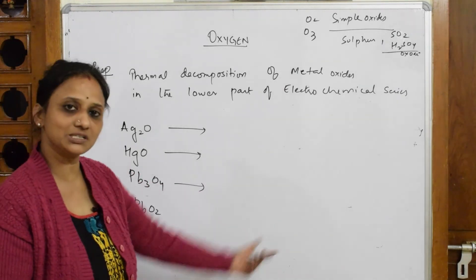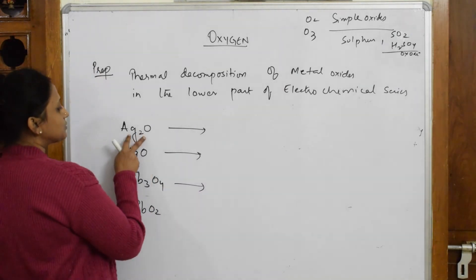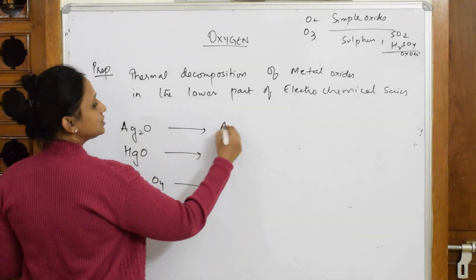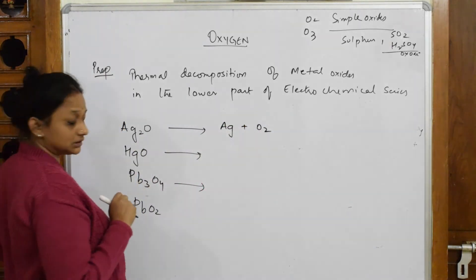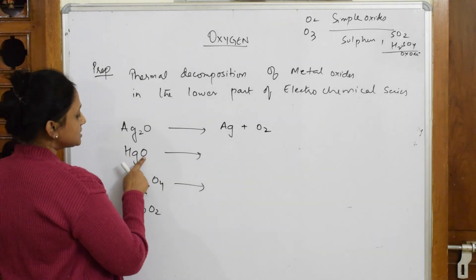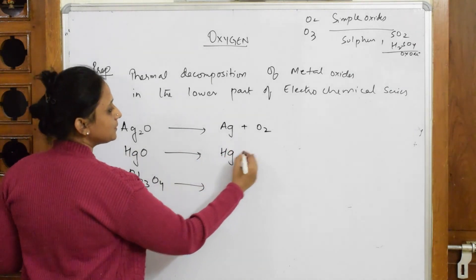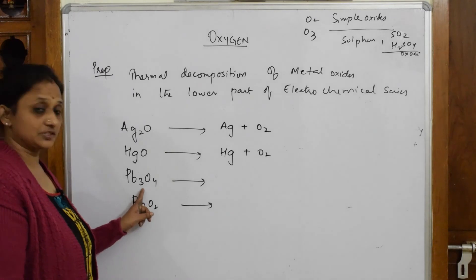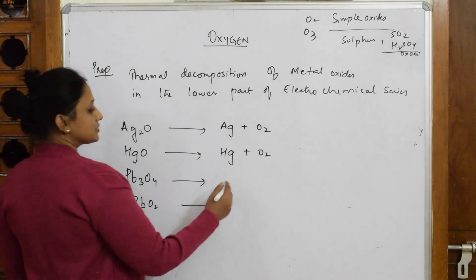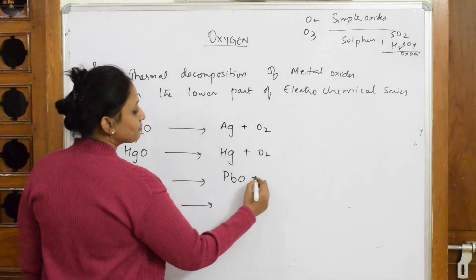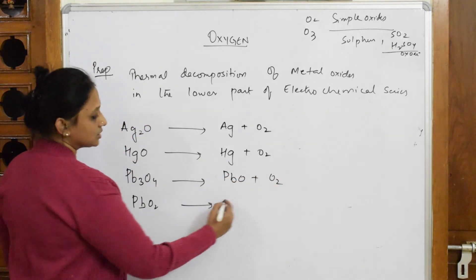Now when this decomposes, Ag2O decomposes into silver plus oxygen gas. When HgO decomposes, it forms mercury plus oxygen. When the lead oxide pb3O4 dissociates, it dissociates into pbO plus O2. This also dissociates into pbO plus O2.